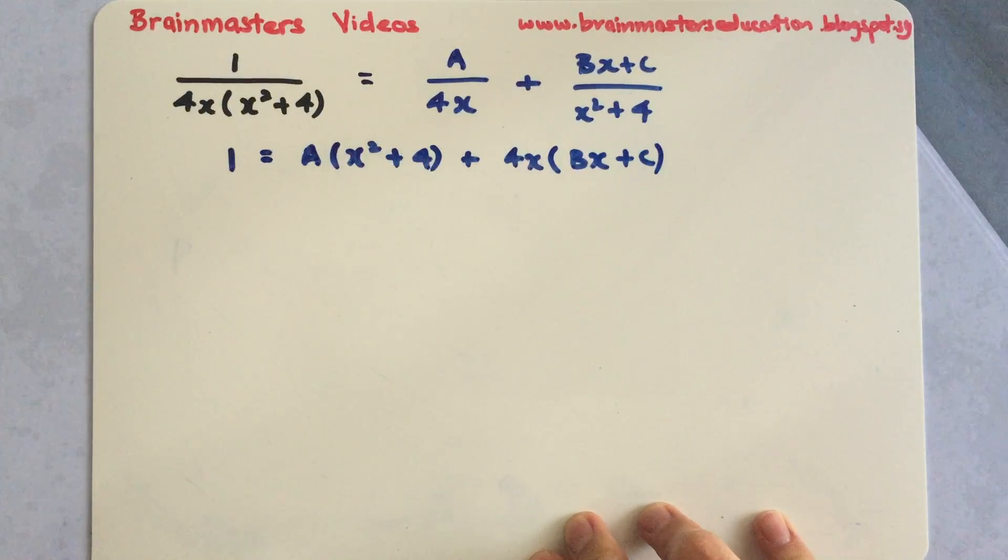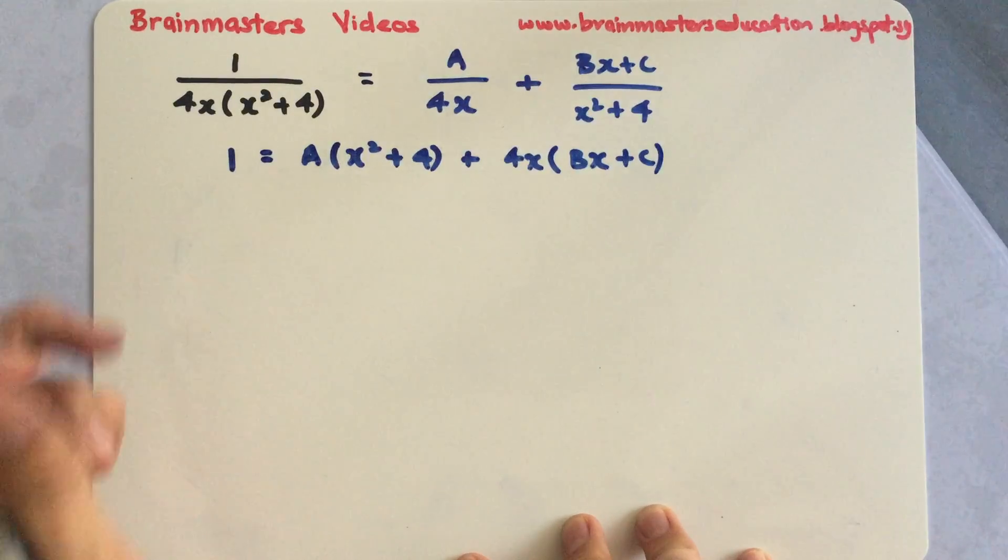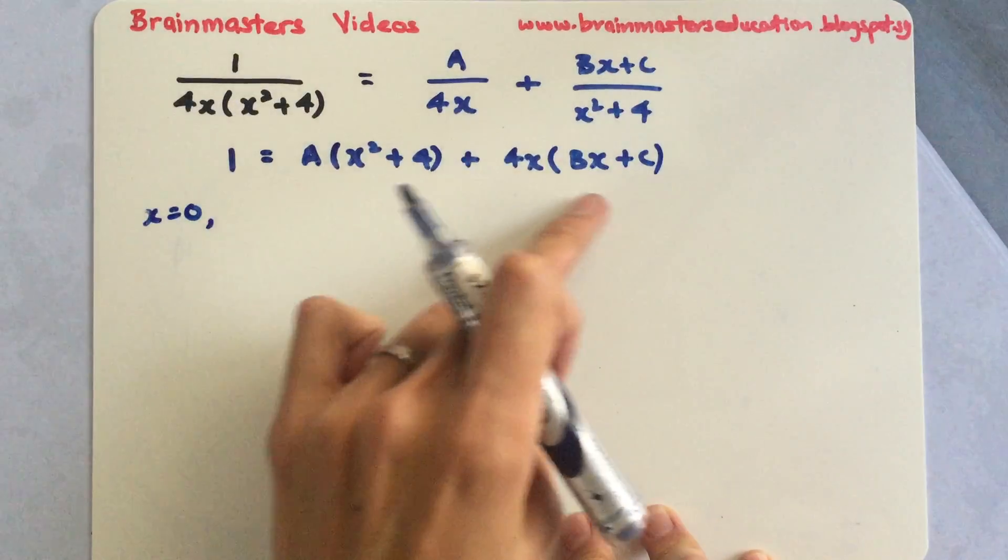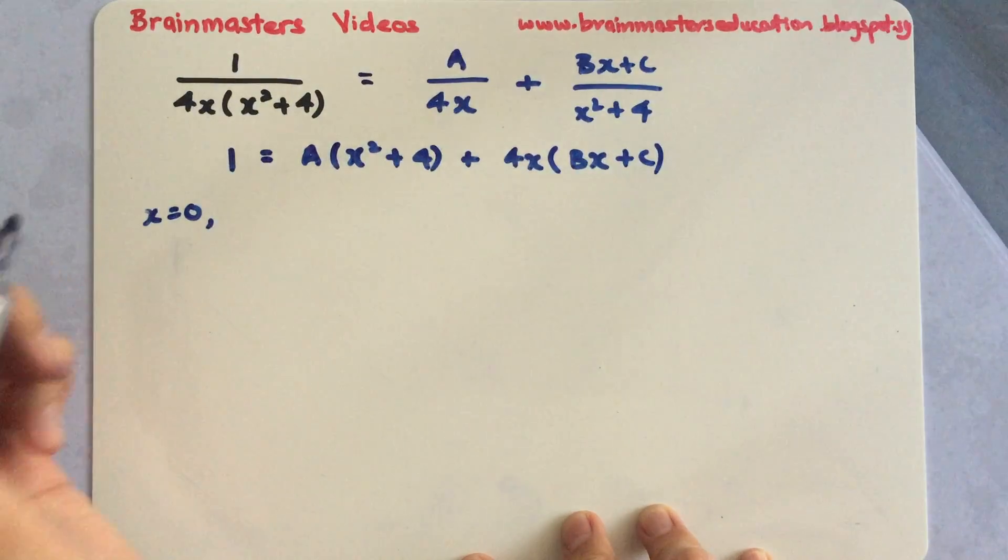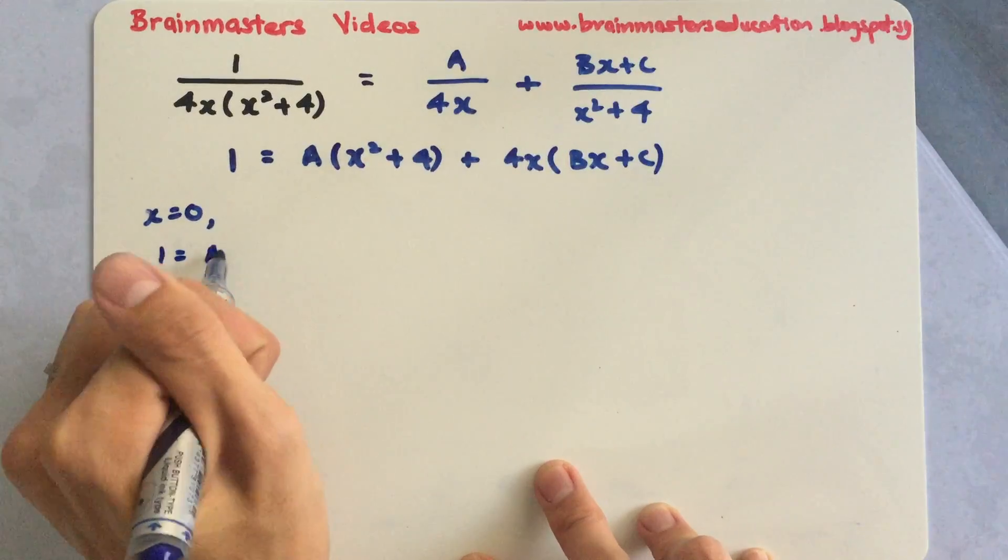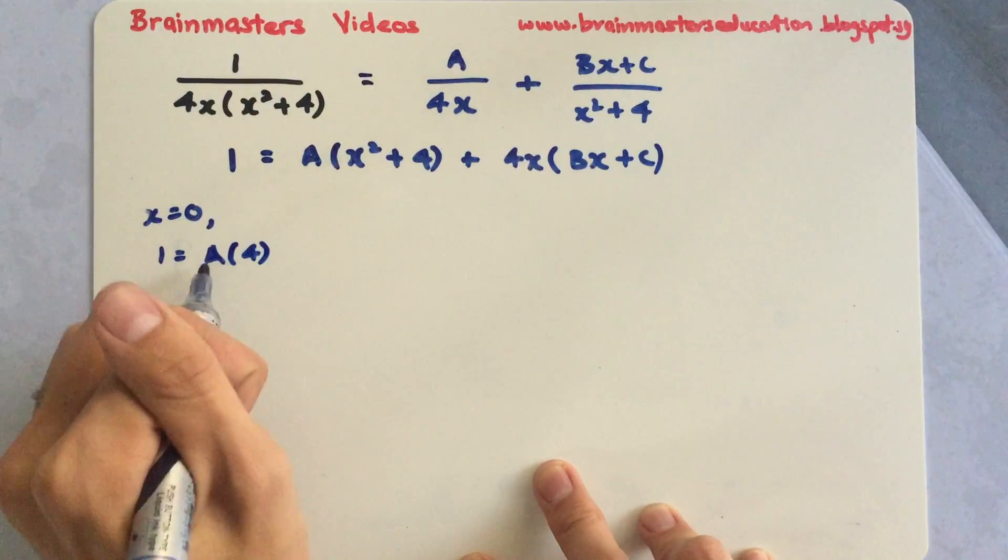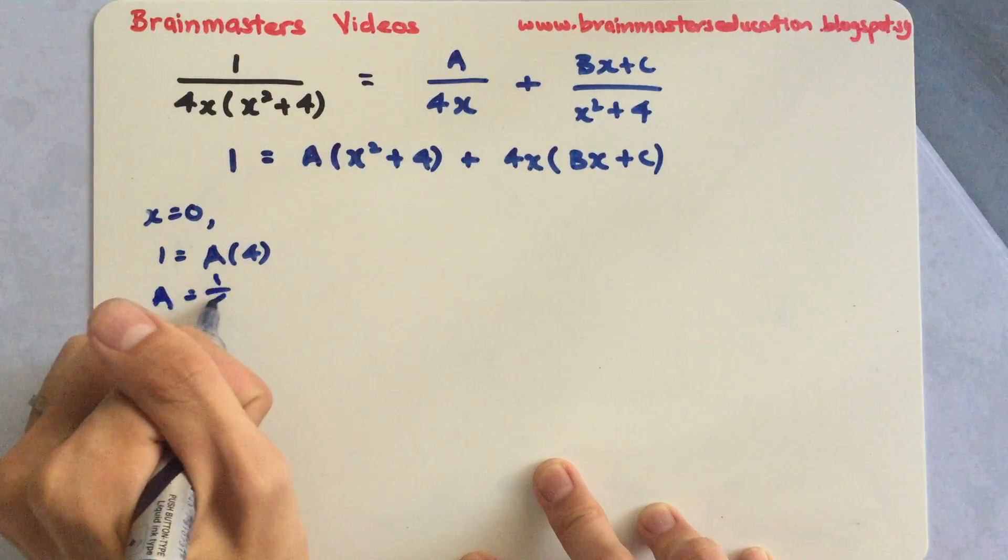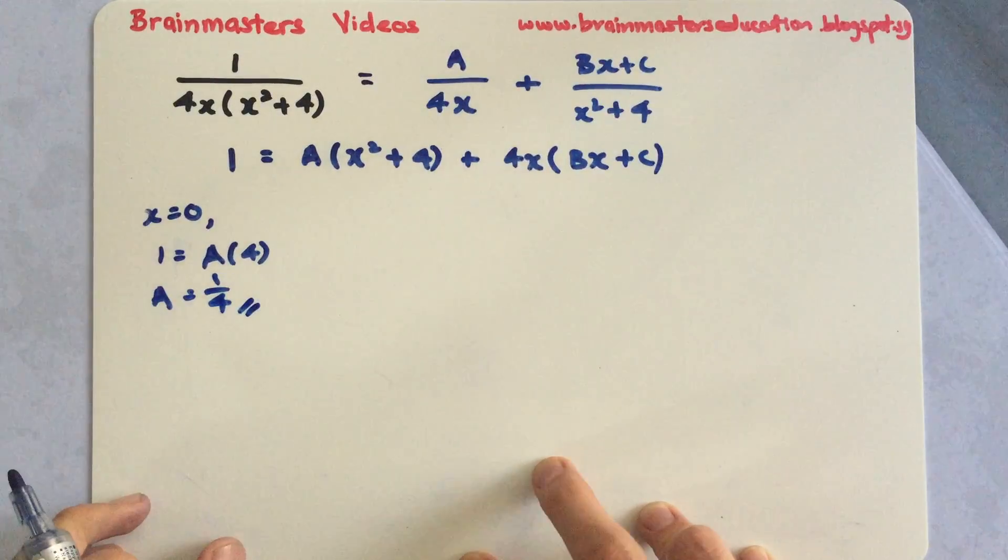We have this line now. We need to substitute a number in. Over here, we will substitute x equals to 0. By doing so, I will eliminate off this line and I will be able to find my A. So 1 equals to A multiplied to 4, divided by 4 on both sides, I will have A equals to 1 over 4.